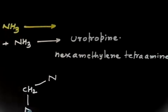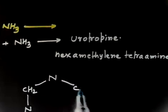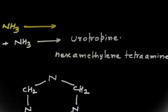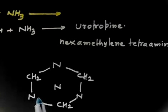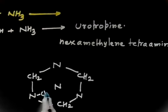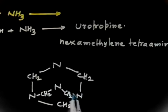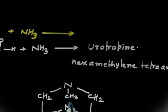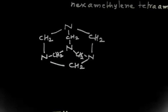Then you have nitrogen, then you have CH2 - alternating CH2 and nitrogen. In the middle also you have one nitrogen, and this nitrogen is connected to the other nitrogens by CH2. So you have a CH2 group here, a CH2 group here, and one CH2 group here. This molecule is called urotropine.